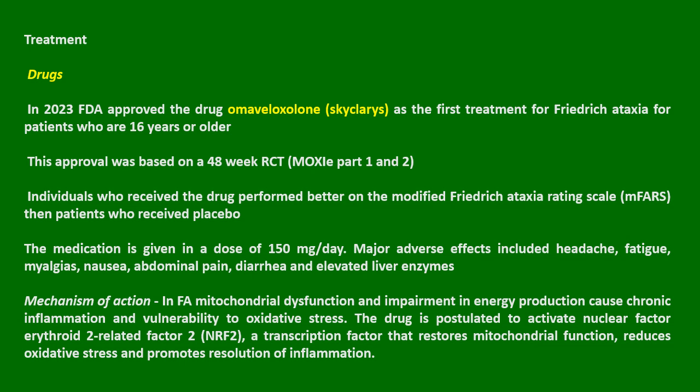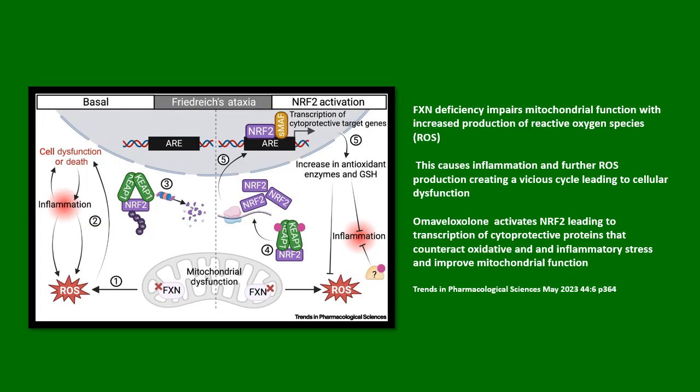Mechanism of action: In Friedrich's Ataxia, mitochondrial dysfunction and impairment in energy production cause chronic inflammation and vulnerability to oxidative stress. The drug is postulated to activate nuclear factor erythroid 2-related factor 2, or NRF2, a transcription factor that restores mitochondrial function, reduces oxidative stress, and promotes resolution of inflammation. Frataxin deficiency impairs mitochondrial function with increased production of reactive oxygen species, causing inflammation and further ROS production — creating a vicious cycle leading to cellular dysfunction. Omavaloxolone activates NRF2, leading to transcription of cytoprotective proteins that counteract oxidative and inflammatory stress and improve mitochondrial function.